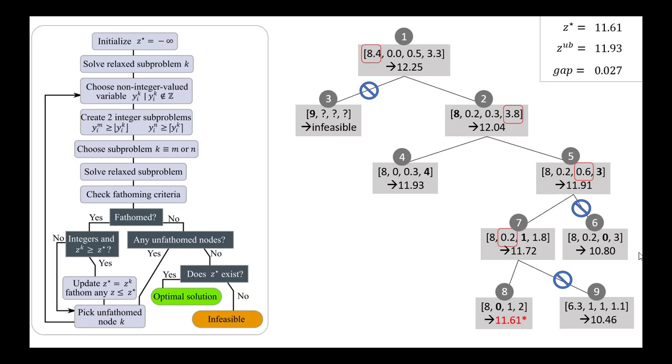So there is no possible way that with these branches and the constraints that have been introduced, that the solutions below this, which would necessarily be worse than these solutions, could do better than our incumbent. And so we just don't even bother exploring those branches anymore.